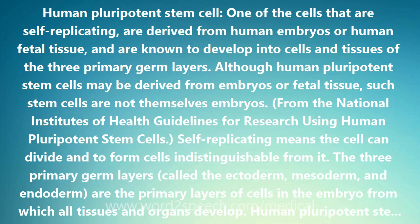Self-replicating means the cell can divide to form cells indistinguishable from it. The three primary germ layers — called the ectoderm, mesoderm, and endoderm — are the primary layers of cells in the embryo from which all tissues and organs develop.